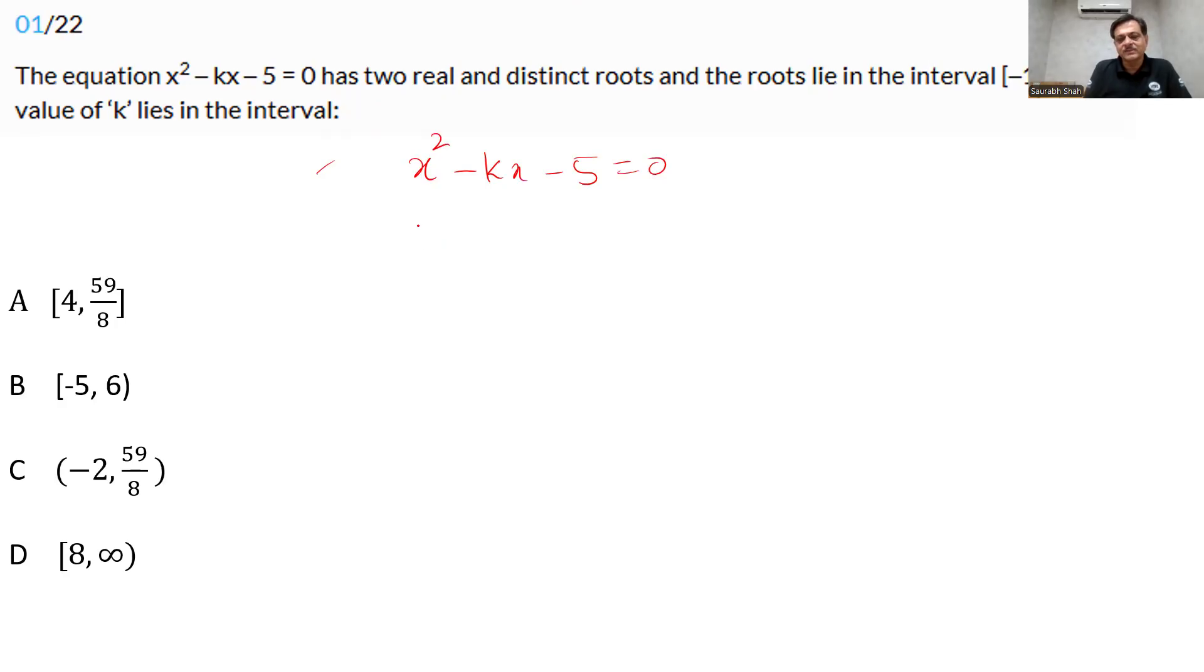Put x is equal to minus 1. So we have minus 1 square, 1 minus k into minus 1 minus 5 is equal to 0. Which gives us, take care, k here is positive. Minus minus becomes positive. So k, 1 minus 5 is minus 4, which goes to the right hand side becomes 4. k is equal to 4.